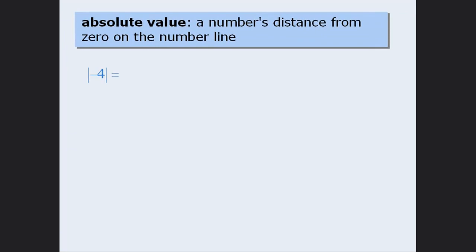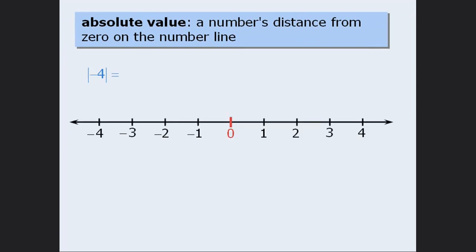To find the absolute value of negative 4, we'll draw a number line and then locate negative 4 on that number line. Since negative 4 is 4 units away from 0, we can conclude that the absolute value of negative 4 is equal to 4.